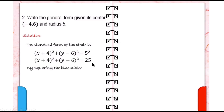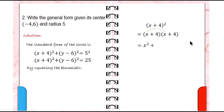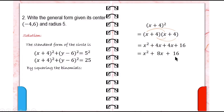To write its general form, we need to square the binomials. So x plus 4 raised to 2 is equal to x plus 4 times x plus 4. Distributing: x times x is x squared, plus x times 4 is 4x, plus 4 times x is 4x. Then we combine 4x and 4x.